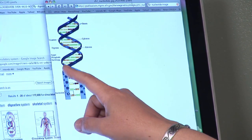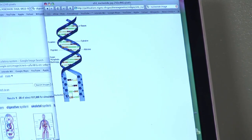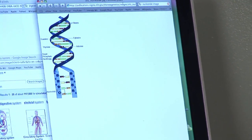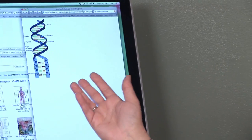They stack on top of each other, connected by their phosphate molecules, and form this long strand of DNA, which twists up and is called a double helix.